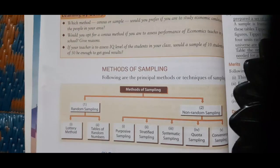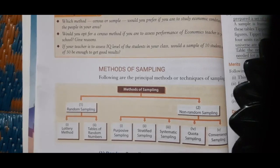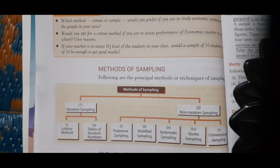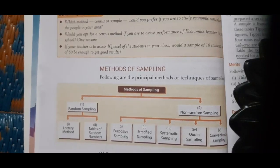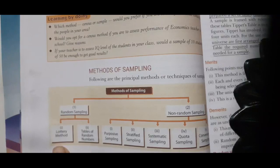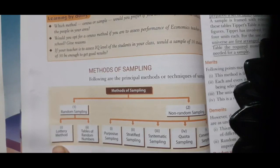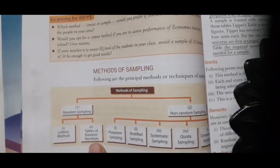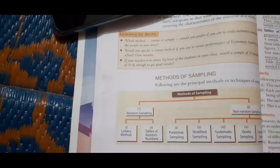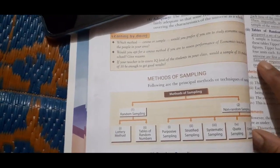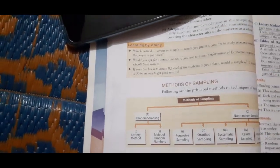Random sampling is that method of sampling in which each and every item of the universe has an equal chance of being selected in the sample — that is, there is equal probability for every item. In the lottery method, paper slips are made for each item of the universe, shuffled in a box, and then impartially some slips are drawn to form a sample. In the tables of random numbers method, some statisticians have prepared sets of tables called tables of random numbers. All items of the universe are first arranged in order, and then using Tippett's table, the required number of items are selected as the sample.